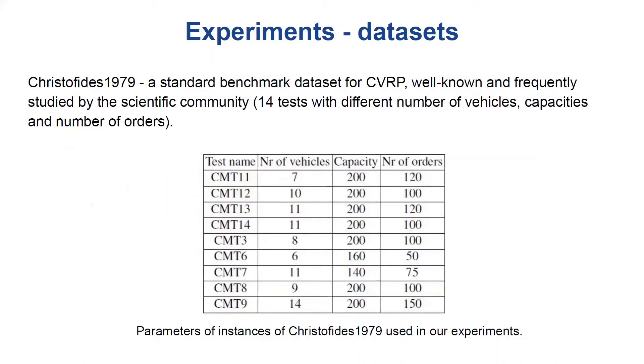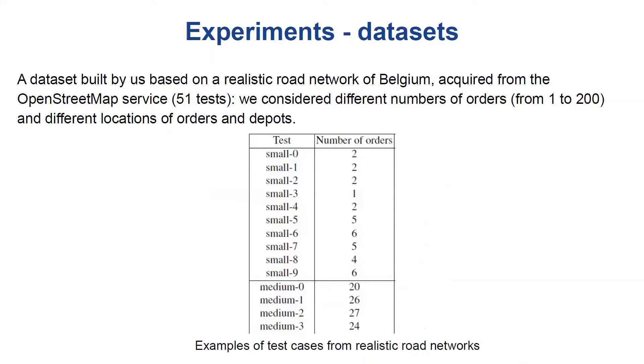In case of the Christofides dataset, for the purpose of our experiments, we selected only 9 datasets, because in case of other tests, some hybrid or classical algorithms were not able to find any good solutions. For the realistic test cases from the OpenStreetMap service, we prepared 51 tests in which we considered different numbers of orders, from 1 to 200, and different locations of orders.